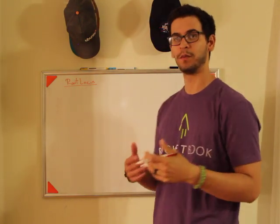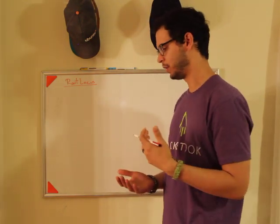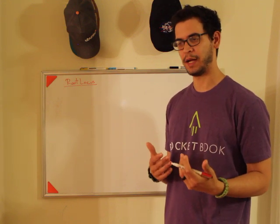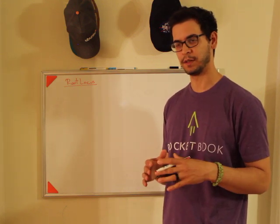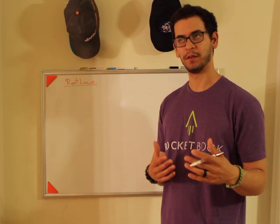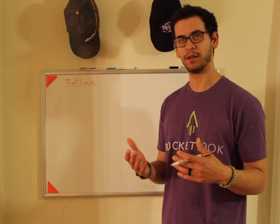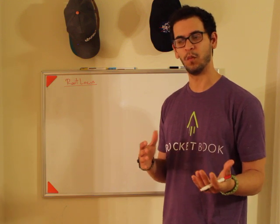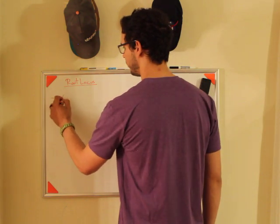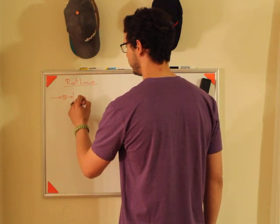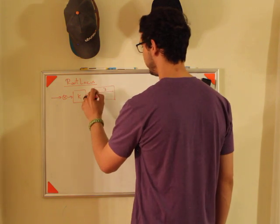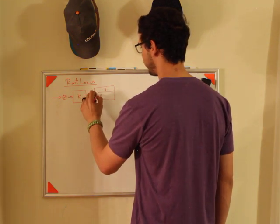So the first question is, why root locus? We saw in a couple of videos back about Routh-Hurwitz, which determines bounds on stability, but it really just tells you the quantitative value of what K can be before it blows up. So the example problem that people typically give you is you have a controller K and a third-order system.